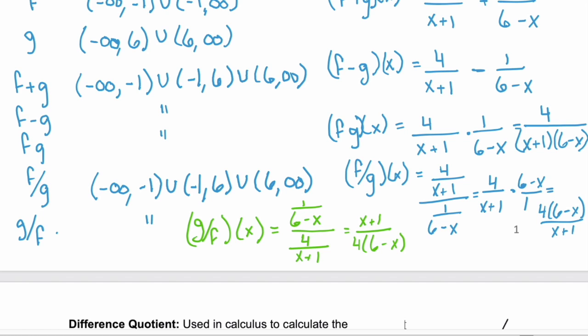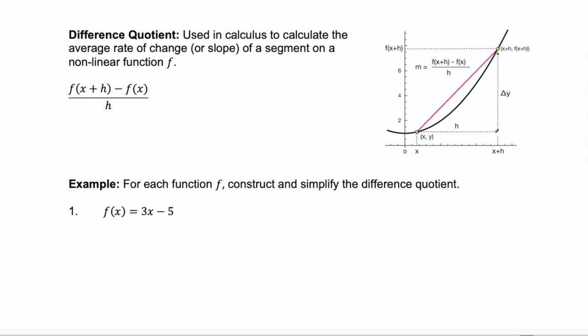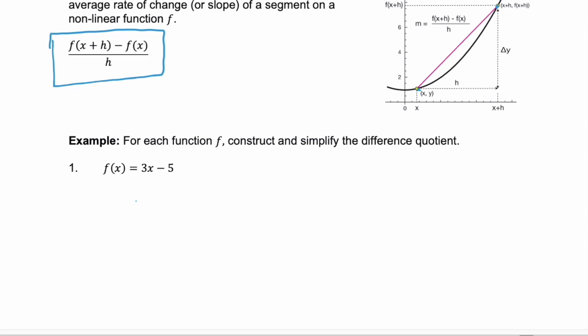Why is this important? This builds us up to the difference quotient, which is extremely important in calculus to help us calculate the average rate of change of a line segment connecting two points on a non-linear function — to find the rate of change. Remember what it means to find f of x plus h: take the given function and wherever you have x, replace it with x plus h. So f of x plus h for a given function is 3 times the quantity x plus h, minus 5 — we just replaced x with x plus h.